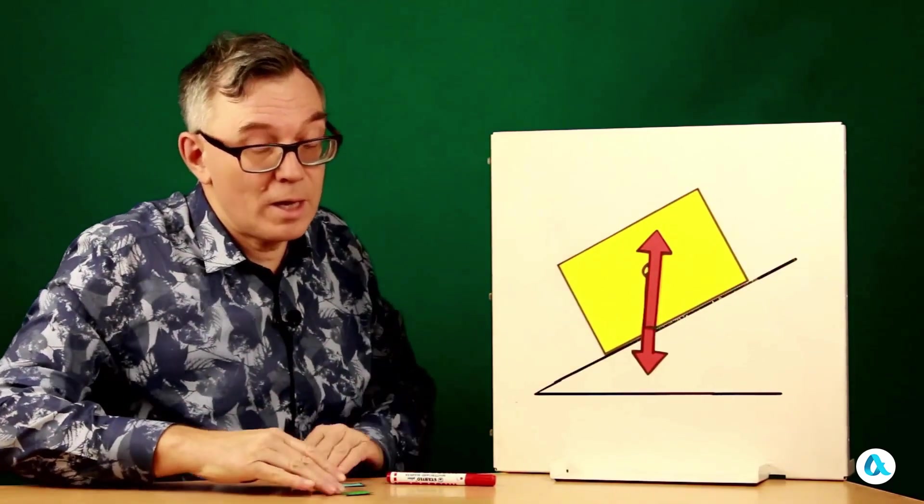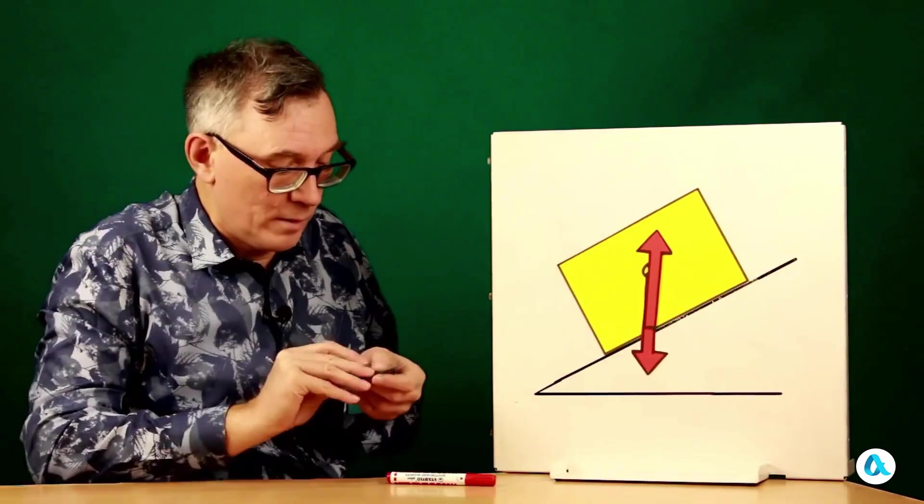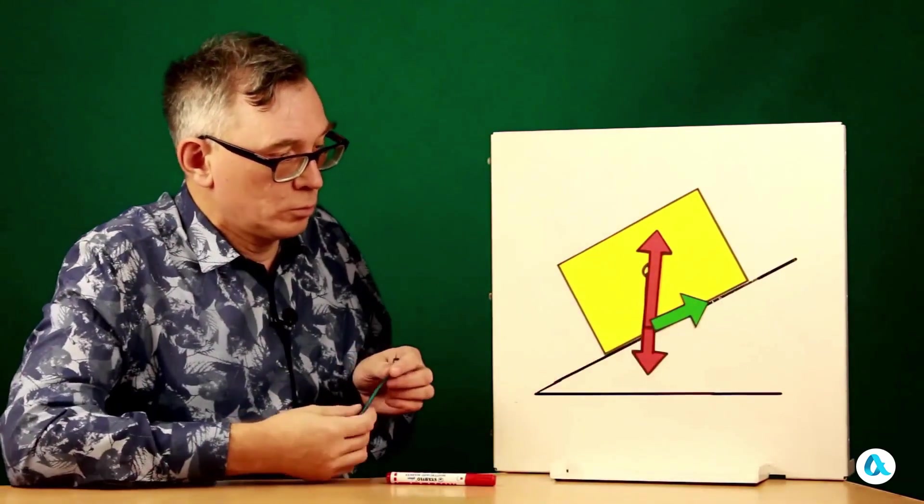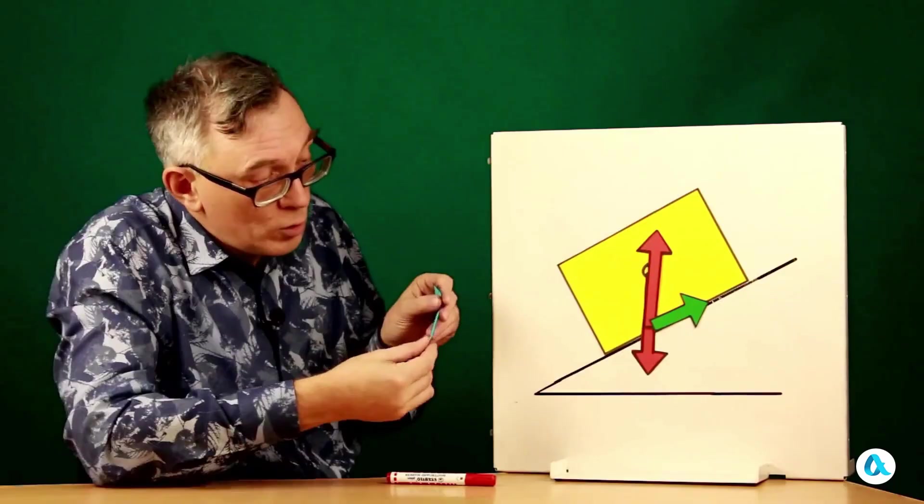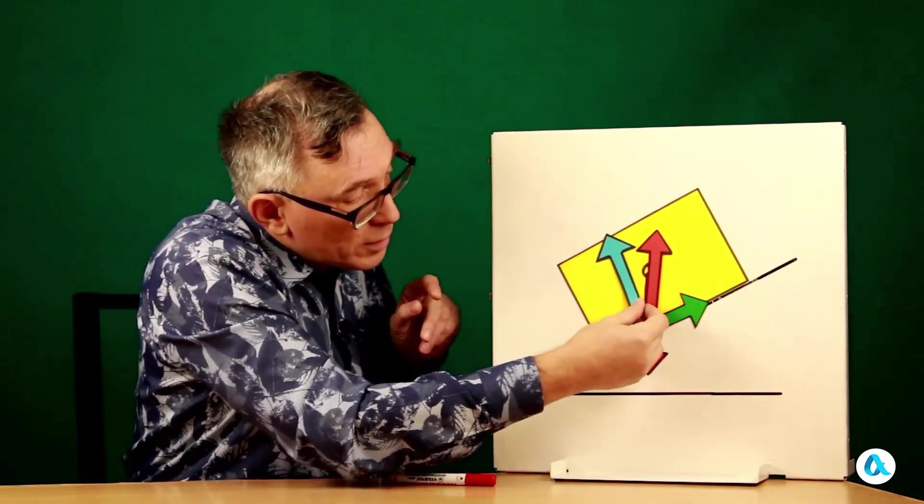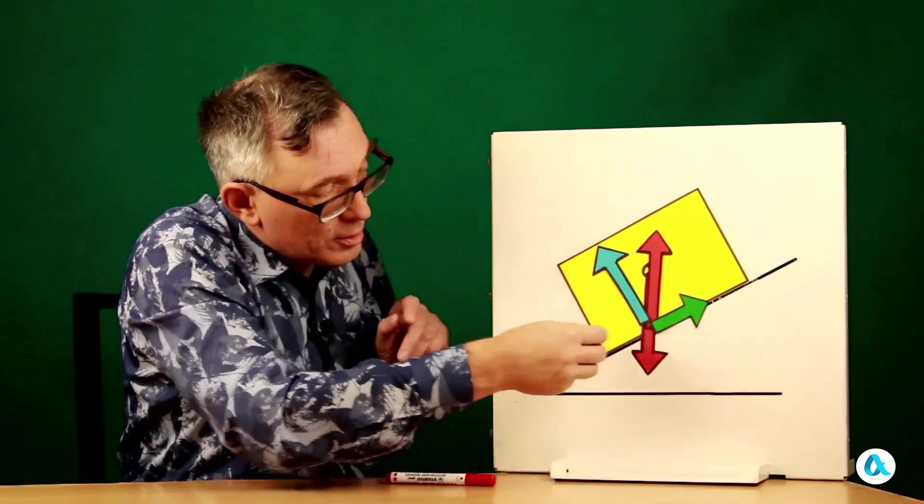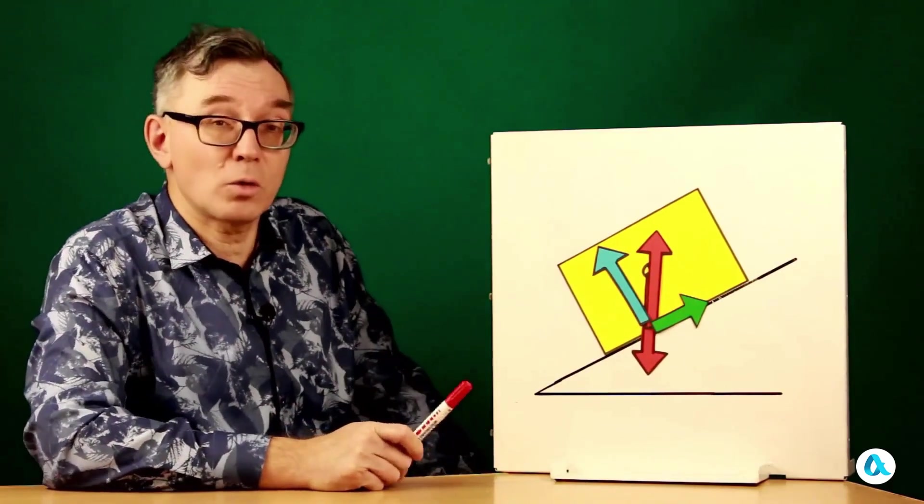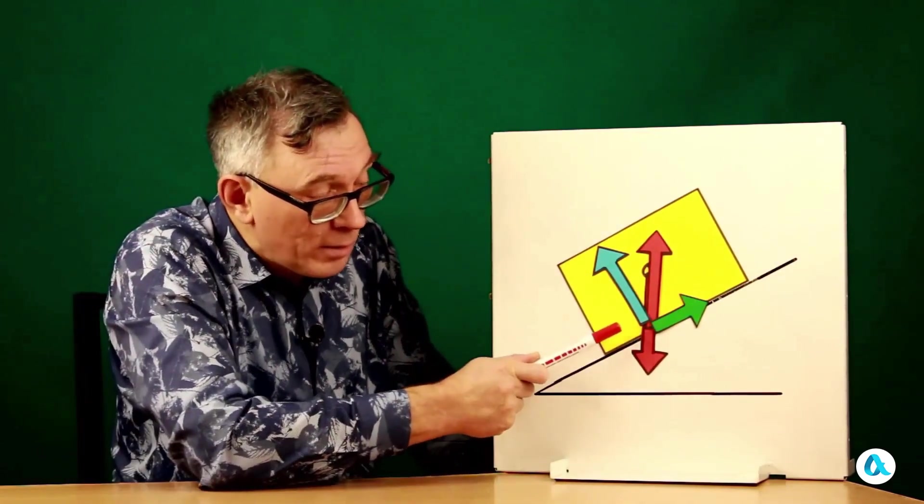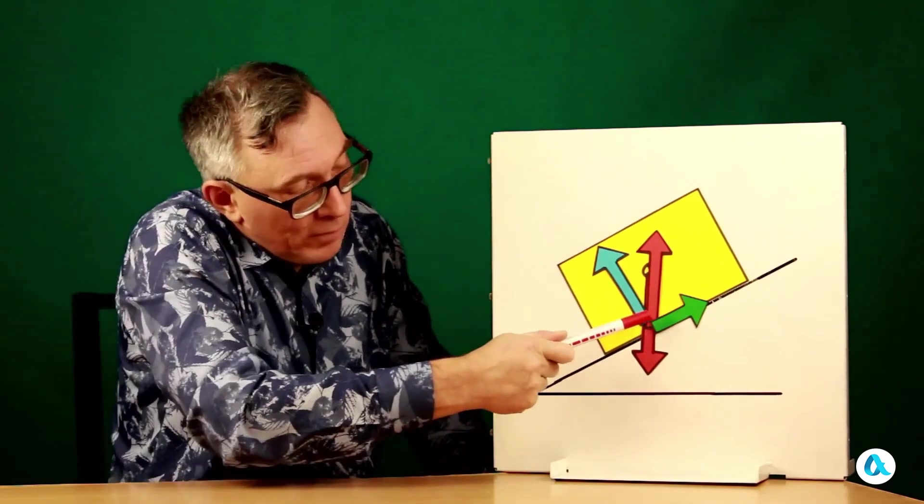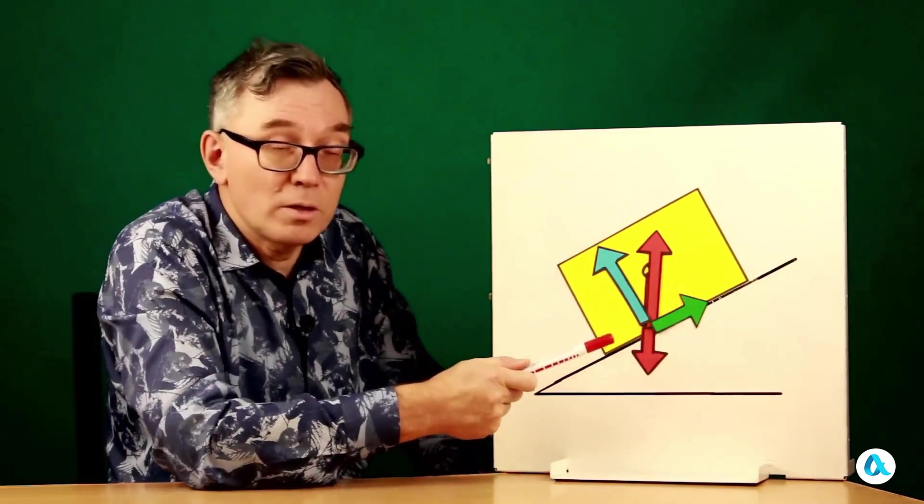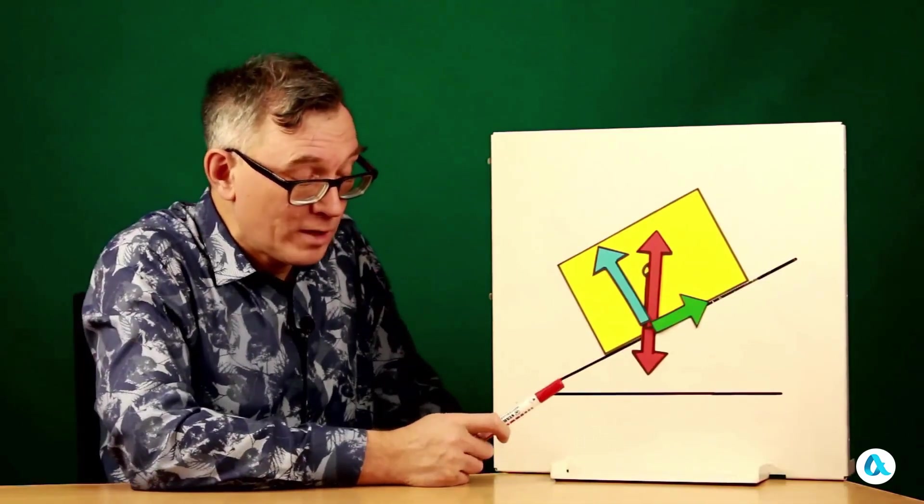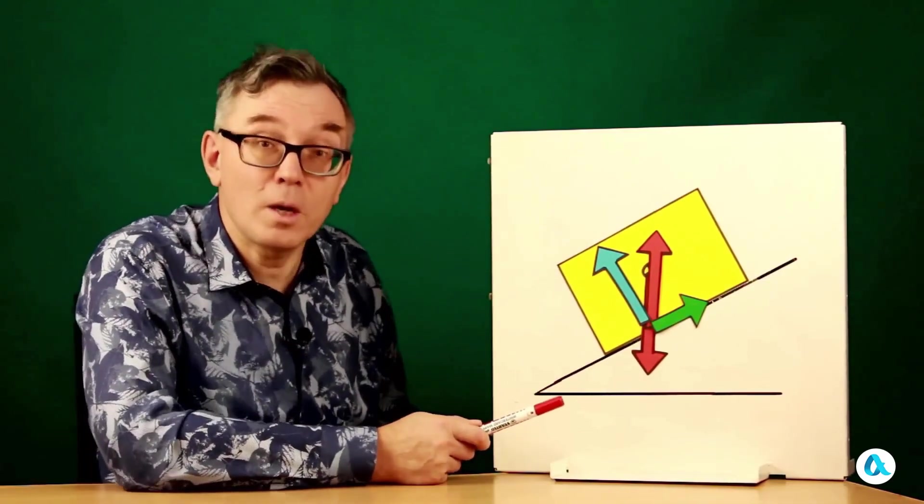Now we can break it down into components. The projection along the plane is the friction force, and the one perpendicular to the plane is the normal reaction force. And look, it turns out that the normal reaction force is applied closer to, shifted toward the front part of the brick. Thus, we can conclude that the front part of the brick presses on the plane more strongly than the back part.